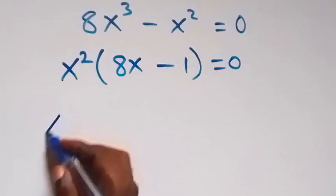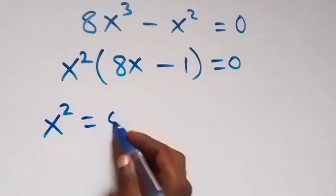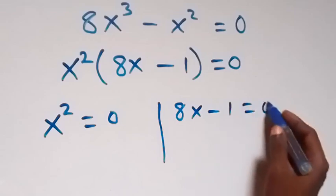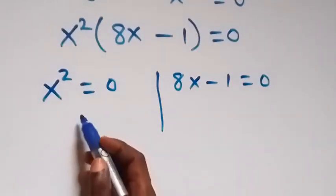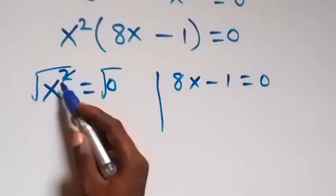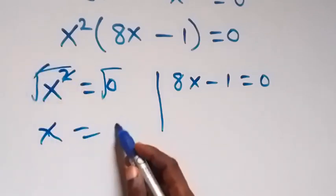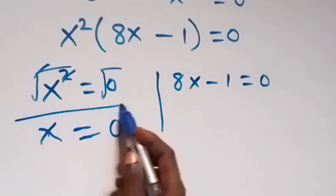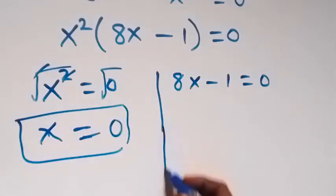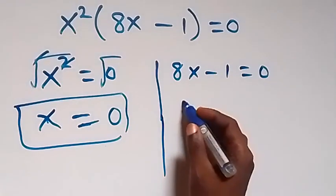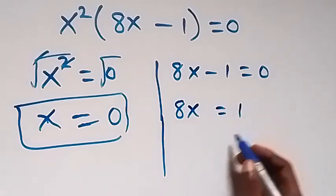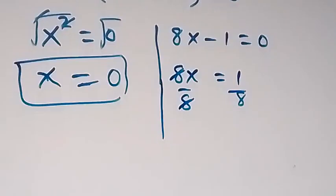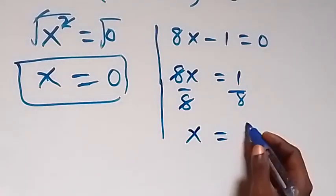We have two possible cases: either x squared equals 0, or 8x minus 1 equals 0. Taking the square root of both sides of the first case, x equals 0. For the second case, 8x equals 1, so dividing both sides by 8, we have x equals 1 over 8.